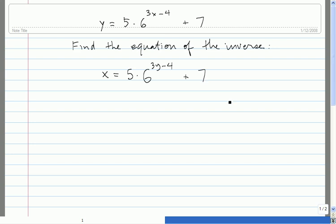Okay, now what we need to do is get this exponential portion on the side by itself. We begin by subtracting 7 from both sides. Next, we need to divide both sides by 5.